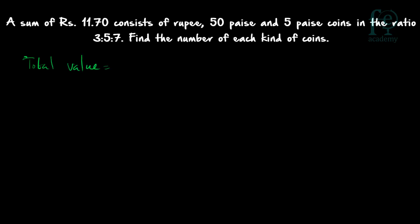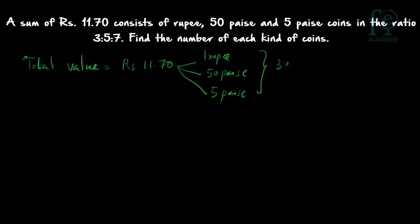The total value of the coins is ₹11.70, consisting of 1 rupee, 50 paise, and 5 paise coins. The ratio of the number of coins is 3:5:7. Unlike the previous question where the total number of coins and ratio of values were given, here the total value and ratio of number of coins are given.